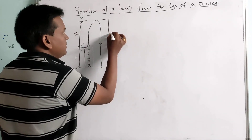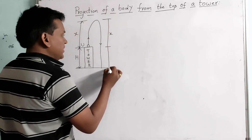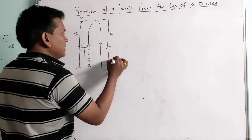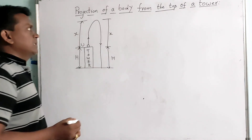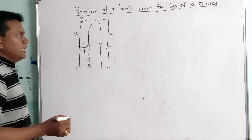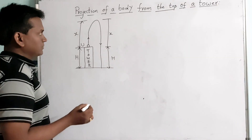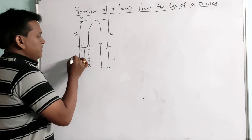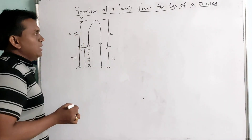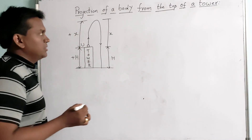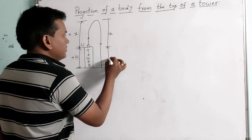This also will be some X, and here this will be the height of the tower. Now, I am considering upward direction as positive and downward direction as negative.